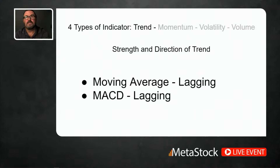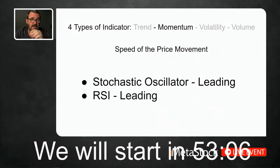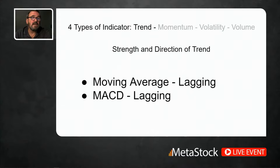Moving average is considered an indicator. There are hundreds of different types of indicators organized into four major categories. Today's indicator is clearly a trend indicator, along with things like the MACD — concerned about the strength and direction of trend. There are other categories like momentum, volatility, and volume, but today we're really talking about a trend indicator, and specifically a lagging indicator.